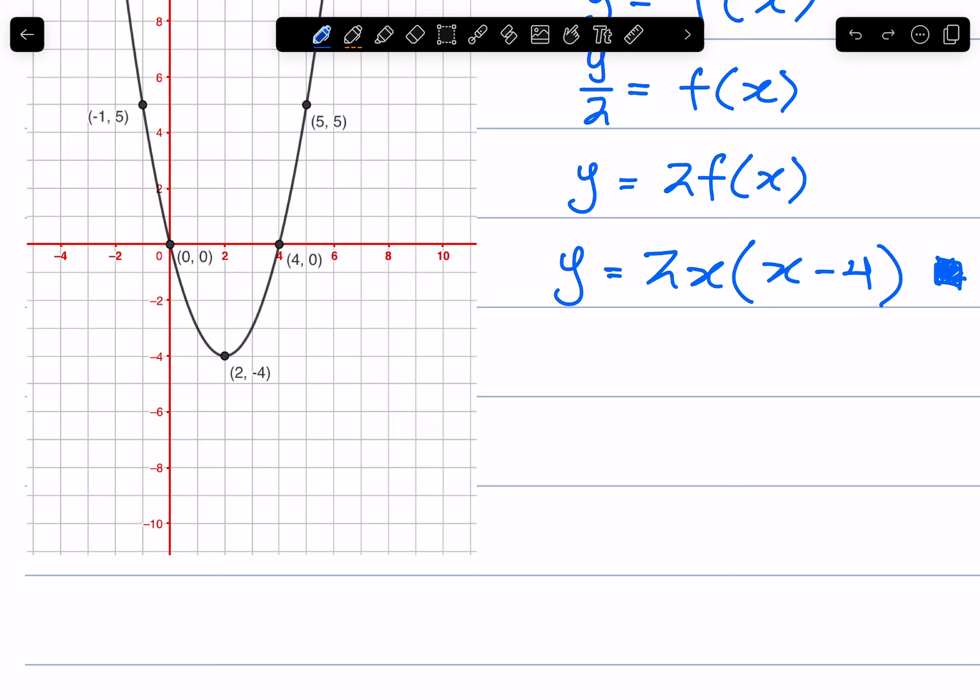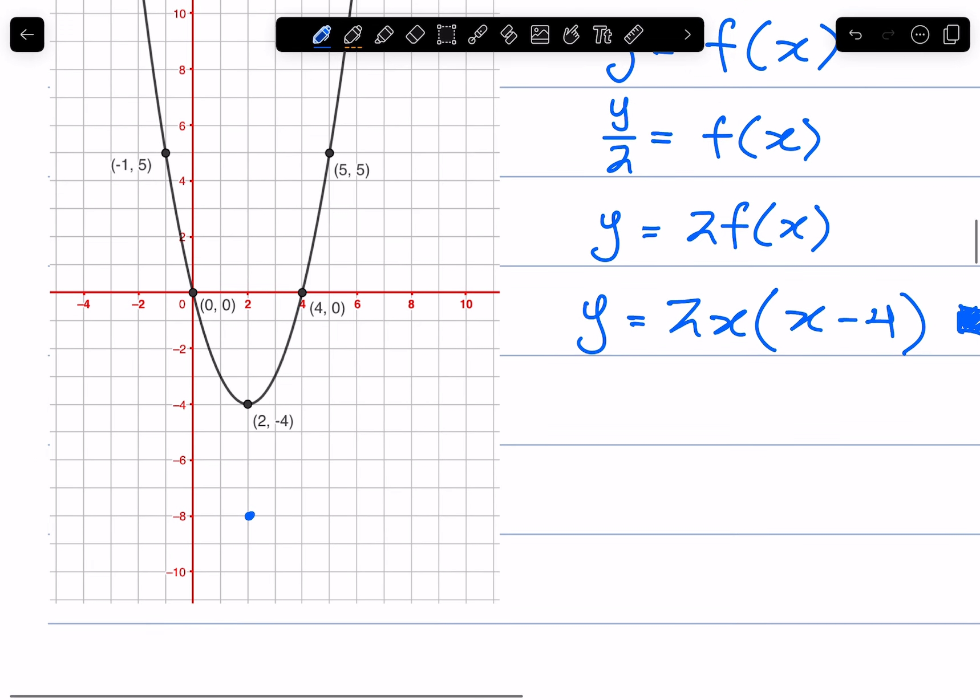Its distance now is going to be 8. This point here, its distance vertically to the x-axis is 0 multiplied by 2 is still 0. The same logic applies for this point. It won't change if it's on the x-axis.